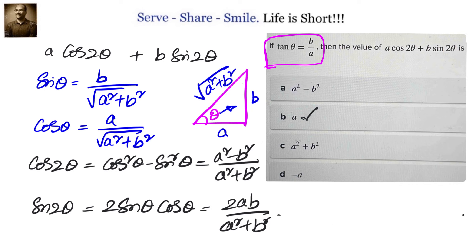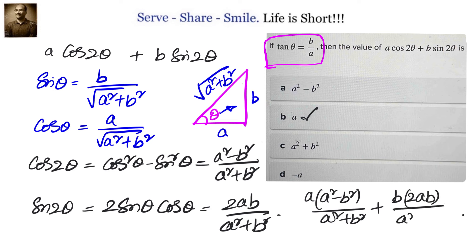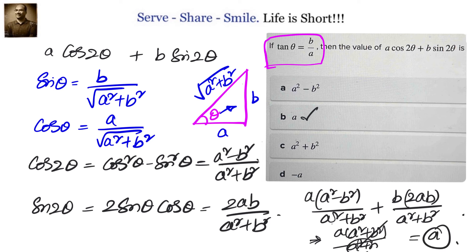Now substituting: a·(a² − b²)/(a² + b²) + b·(2ab)/(a² + b²). Taking a as common, we get a·(a² + b²)/(a² + b²), which cancels to give the answer a. So you can use this method also if you don't know the tan-form formula. From tan θ = b/a you can calculate sinθ and cosθ and substitute into the formulas for cos2θ and sin2θ. Thank you.